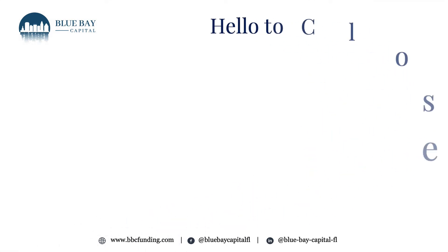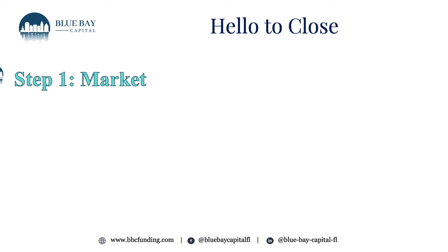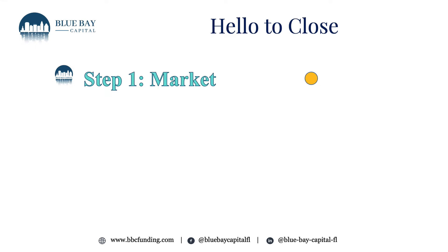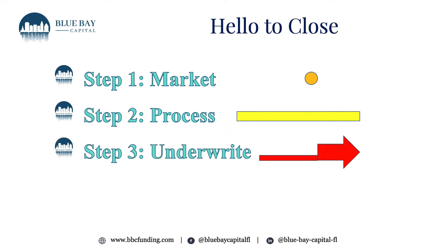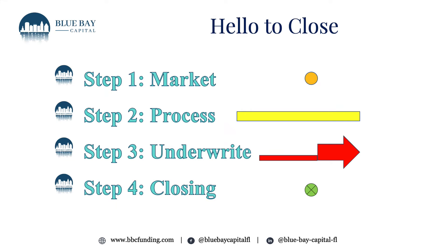Let's discuss the process from hello to close — the four stages of getting a file to closing. Stage one is marketing, indicated by an orange dot at the beginning of the process. Stage two is processing a loan file. Stage three is underwriting — how you vet the information collected during processing. And stage four is closing, which is the target and the goal.